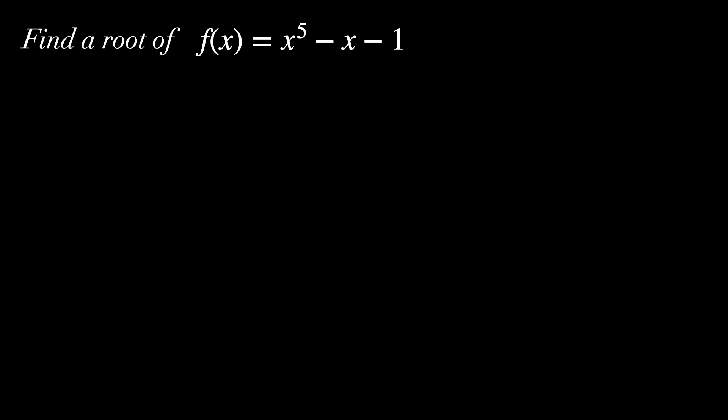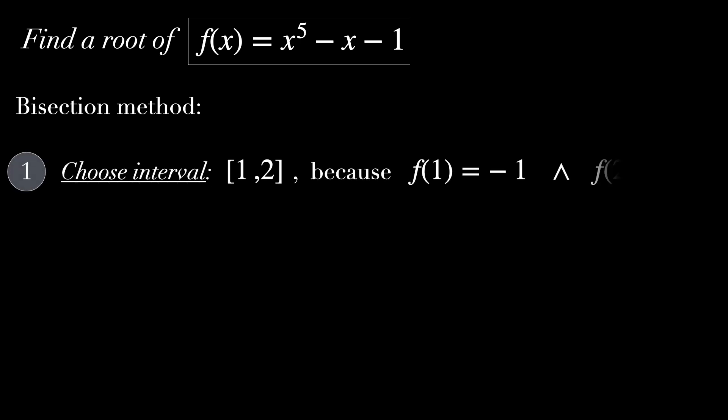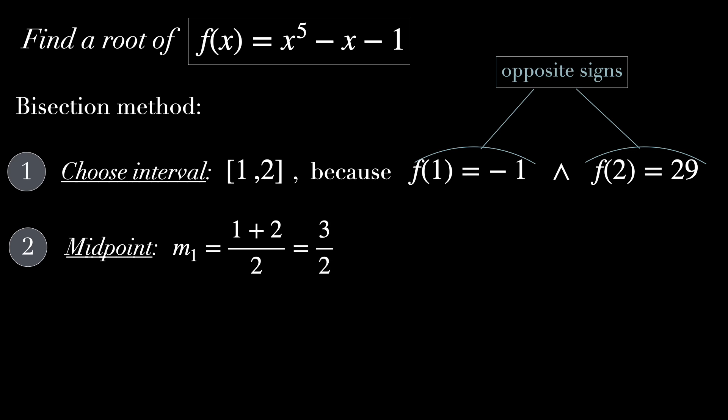To illustrate it, let's try to find one of the roots of this quintic equation: f of x equals x to the power of 5 minus x minus 1. Let's focus on the steps of the bisection method. First, we choose an interval 1, 2, just because f of 1 is minus 1 and f of 2 is 29, so they have opposite signs. Then we calculate the midpoint, the first midpoint: 1 plus 2 over 2 equals 3 halves.